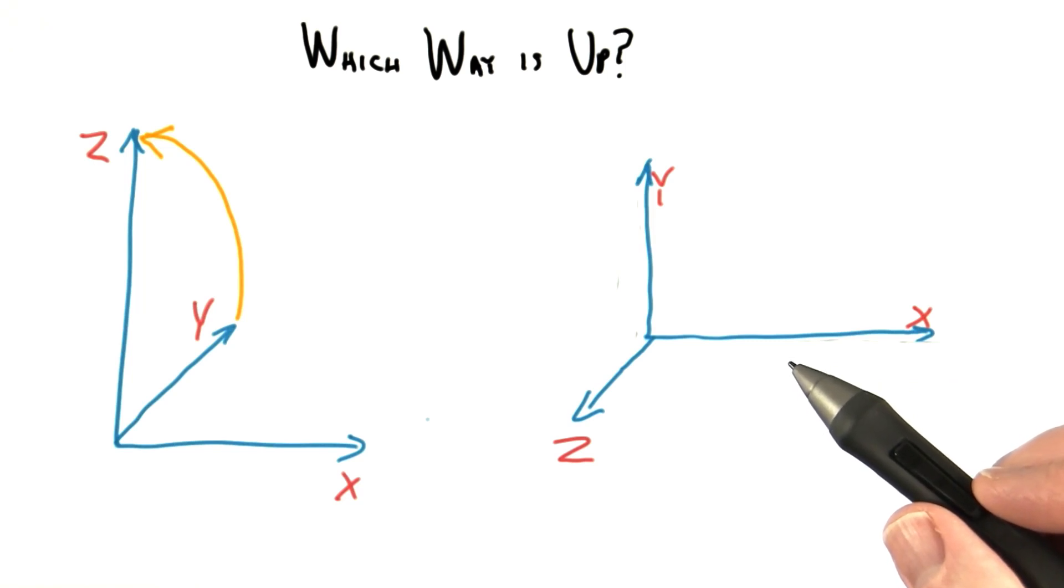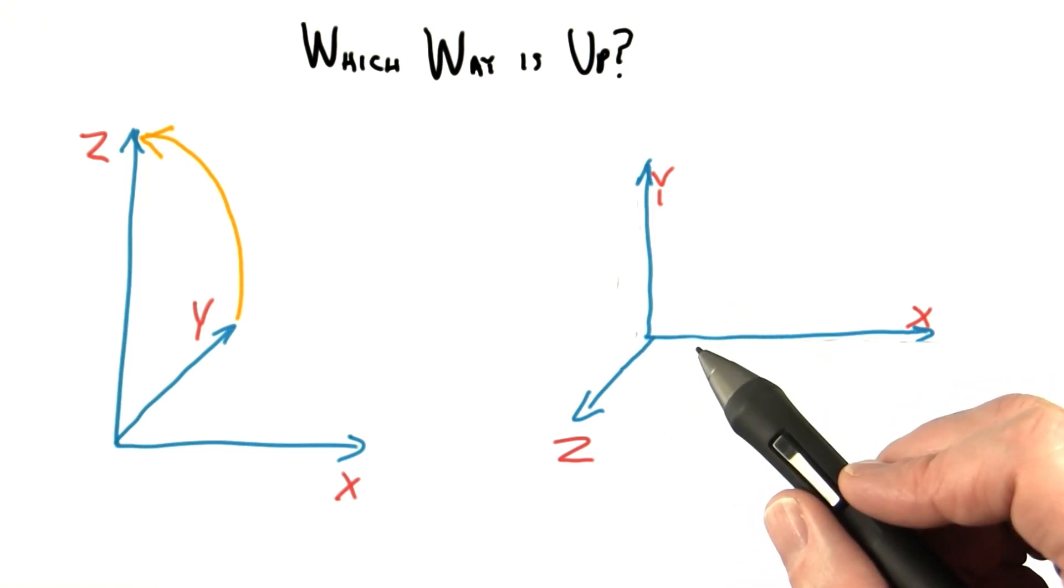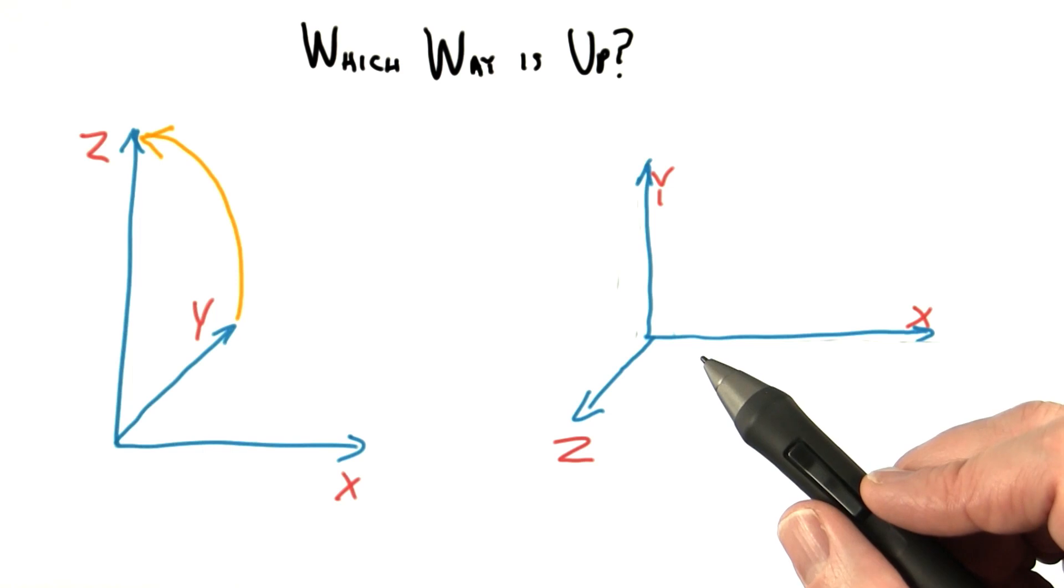However, you've now been warned. If you read in some model some day into your program and the object is sideways, it's probably because the model's up direction is different than what you're expecting.